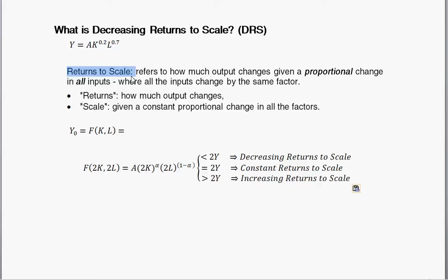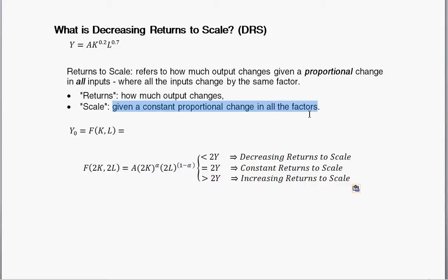Returns to scale refers to how much output changes given a proportional change in all the inputs. By 'returns' we're talking about how much does output change — it's Y here, sometimes GDP, sometimes called real income, sometimes called production or output. And when we say 'scale,' we're talking about a constant proportional change in all the factors.